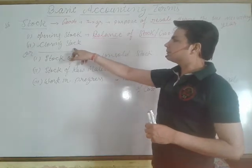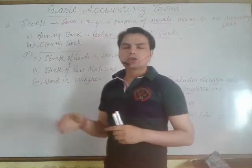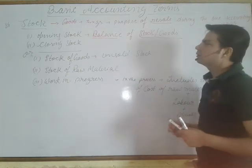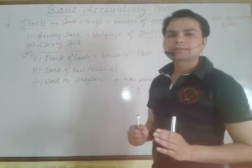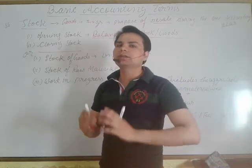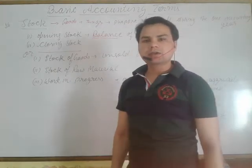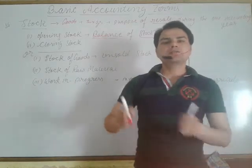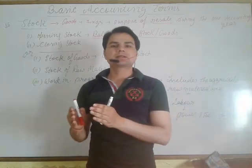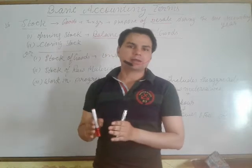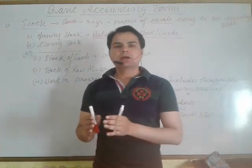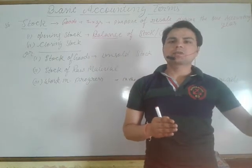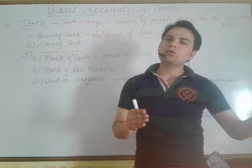Where is the closing balance? Closing stock is the balance of the stock lying with the business at the end of any accounting year. For example, if your accounting year is 1st April to 31st March of the next year, then 31st March is the closing stock date.